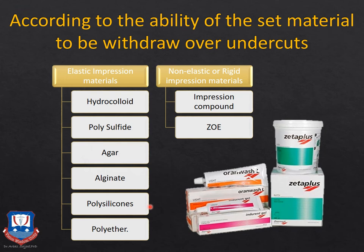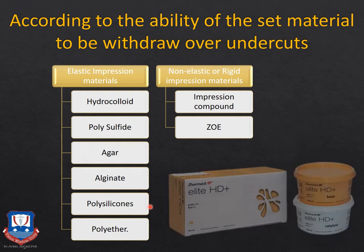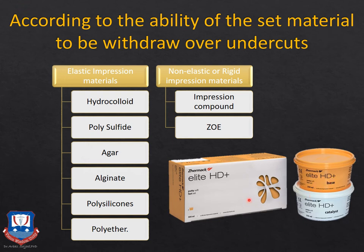The other type of silicone material is addition silicone — for example, Elite HD putty, which is what we currently use in our department. After silicones, we have polyethers, which are also a type of elastomeric impression material. They are unique in that they set by a ring polymerization reaction, whereas silicones, alginates, and polysulfides set by condensation or addition polymerization. In the rigid category, we have impression compound and zinc oxide eugenol, which are now being used less due to the advent of newer materials like agar and alginate.